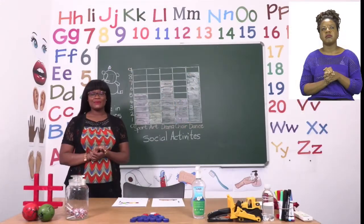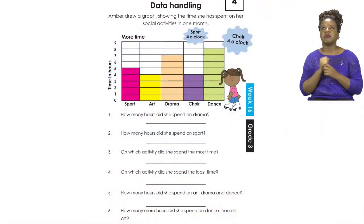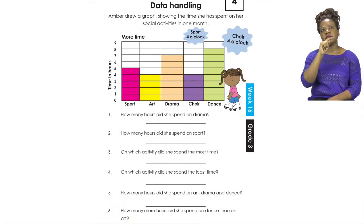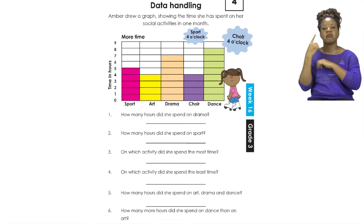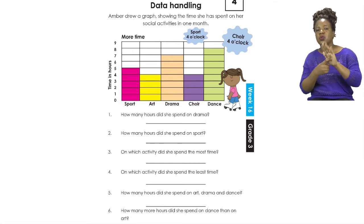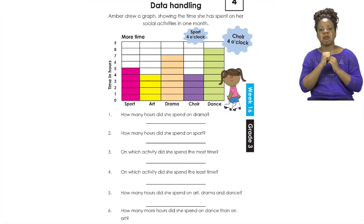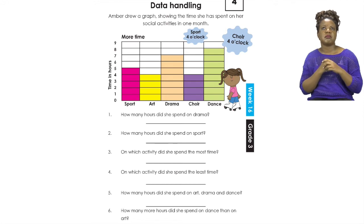To end our lesson, boys and girls, we are going to do an exercise on page 27. On page 27 we are doing data handling. This is when we are given some information on a chart. It is our job to check the graph that we have been given so that we can answer the questions. It says: Amber drew a graph showing the time she has spent on her social activities in one month. We can see that there are different activities and on the other side we have time, so let's talk about them before we look at the questions.